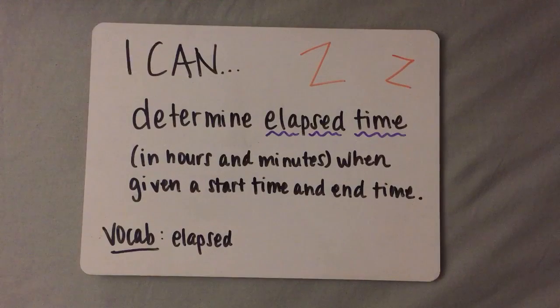Now to use the zoom method you need to feel pretty confident with time including elapsed time, and you also need to be able to add minutes that go over 60 and be able to convert them into hours and minutes. If you can do that you can definitely use the zoom method.